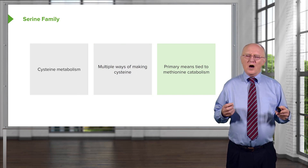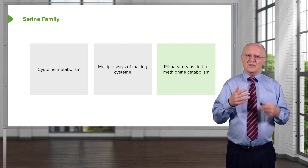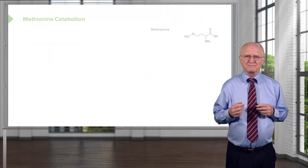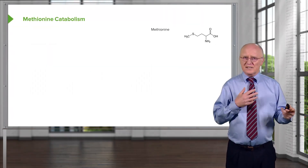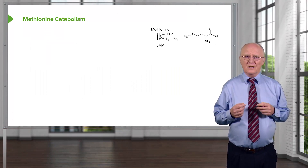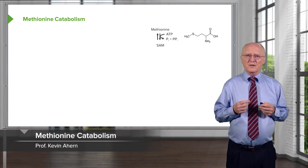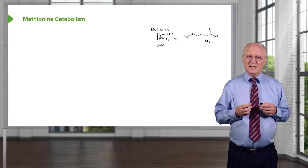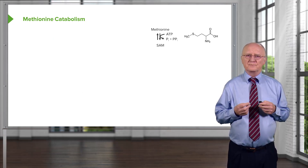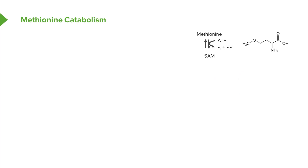The primary means of making cysteine is tied to the metabolism of methionine. Methionine is the other amino acid that contains a sulfur. In this process, methionine is actually donating a methyl group. Methionine is used to make S-adenosylmethionine in a rather complicated reaction; the adenyl part of ATP combines with methionine to make S-adenosylmethionine, or SAM, catalyzed by methionine adenosyltransferase. In the second step, S-adenosylmethionine is converted to S-adenosylhomocysteine, or SAH.